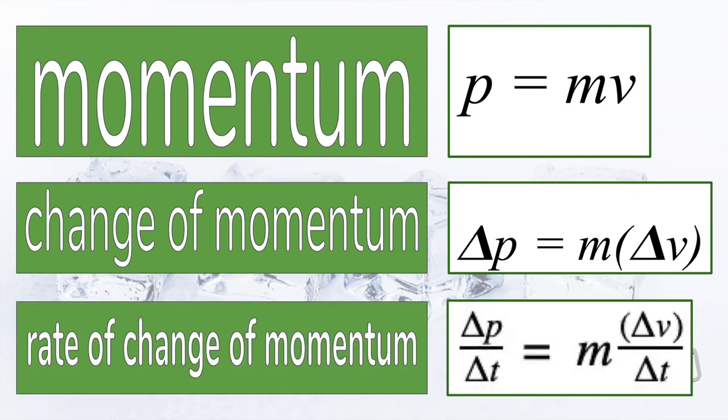The rate of change of momentum means the change in momentum per unit time, and so we divide both sides of the formula by delta t.